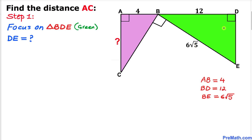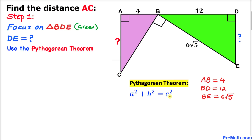We are going to calculate the length DE. Since this is a right triangle, we will use the Pythagorean theorem: a² + b² = c². Always keep in mind that the longest leg, the hypotenuse, is side c. Filling in the formula: 12² + DE² = (6√5)².